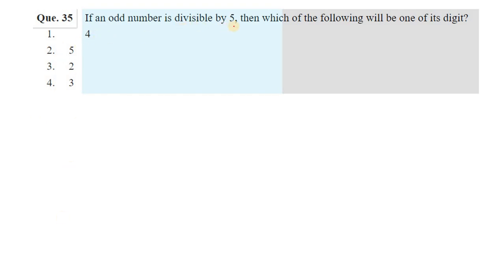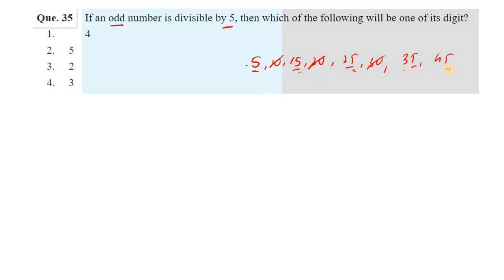If an odd number is divisible by 5, which of the following will be one of its digits? A number divisible by 5 ends in 0 or 5. But since the number is odd, it cannot end in 0. Therefore the digit must be 5. So the answer is 5.